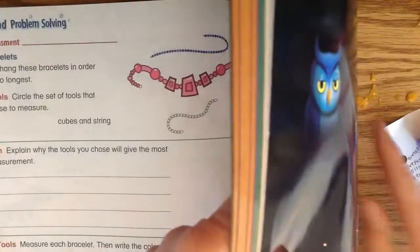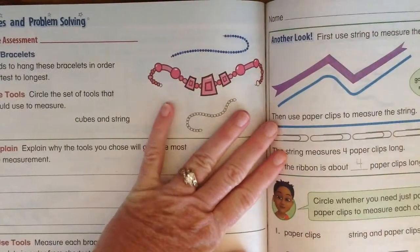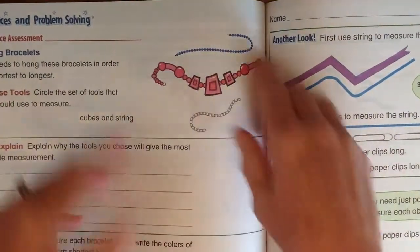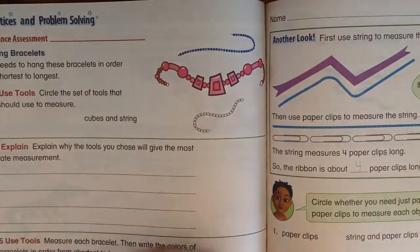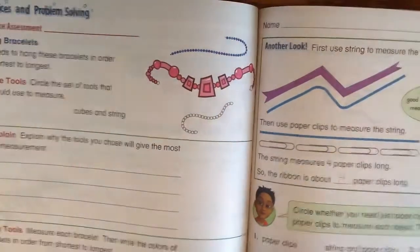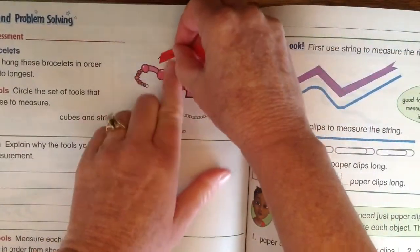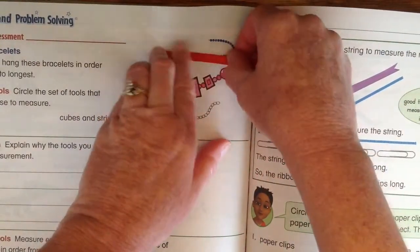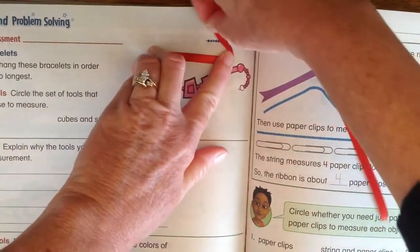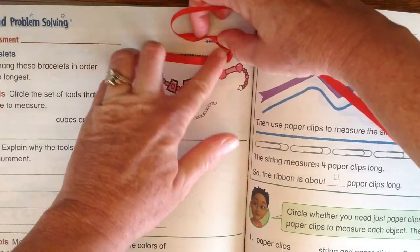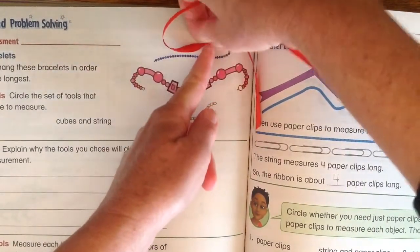So it says Kate needs to hang these bracelets in order from shortest to longest. Notice they're all squiggly. How are we going to know? So I'm going to have to use my string and cubes. So I start right here, come around this top one. And I'm gonna end right about there.